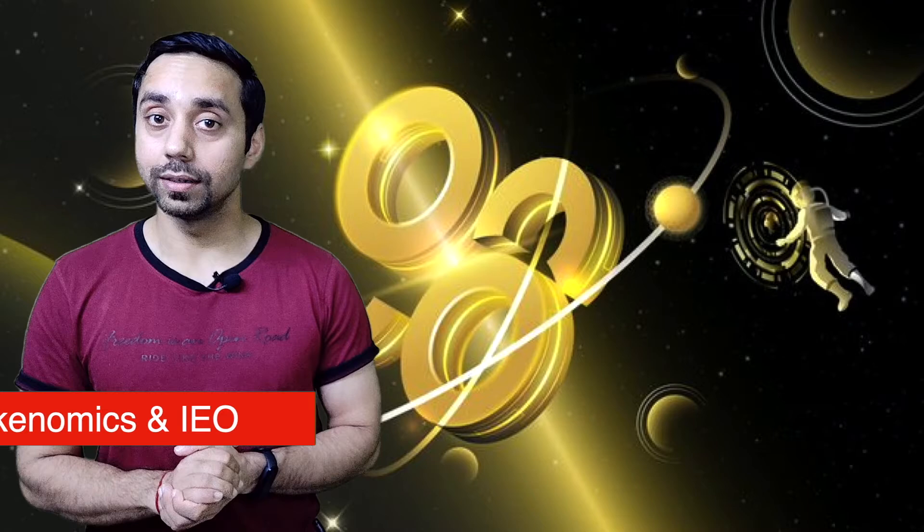After discussing C98 utilities, I will talk about token distribution. Now C98 has a total supply of 1 billion tokens and the majority part, which is 45% of it, goes to ecosystem growth and community development. To check about the complete distribution, you can check the chart which is shown right over here.